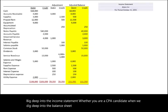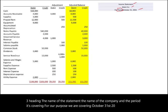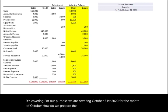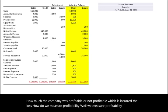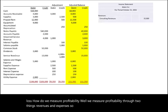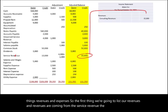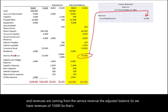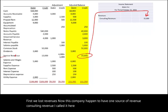The first financial statement is the income statement, and statements are prepared in a specific order. The income statement will have three headings: the name of the statement, the name of the company, and the period it covers. For our purposes, we are covering the month of October 2024. The income statement shows you how much the company was profitable — or not profitable, meaning it incurred a loss. We measure profitability through two things: revenues and expenses. The first thing we list are revenues. This company has one source of revenue — consulting revenue — of $15,000.